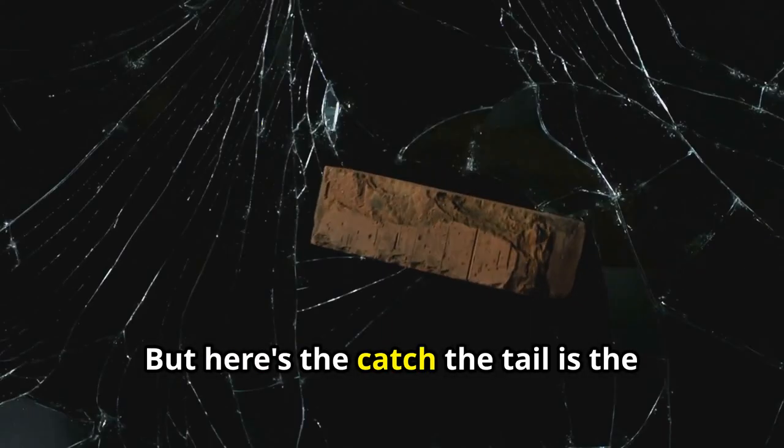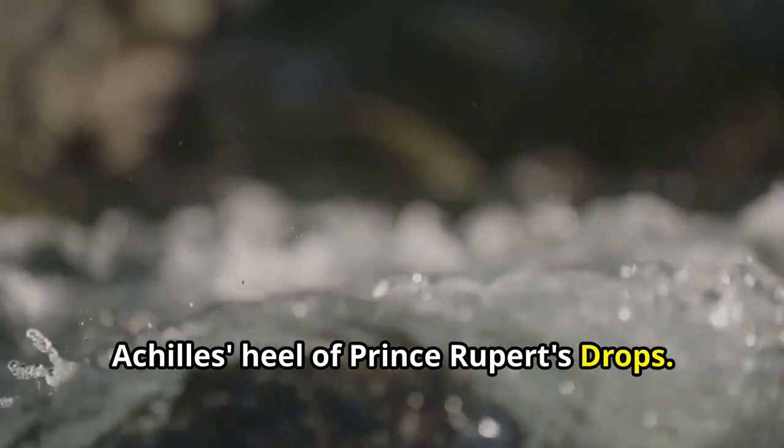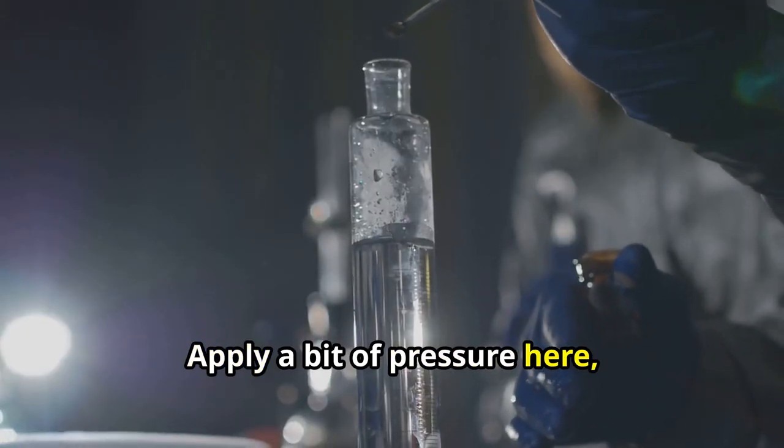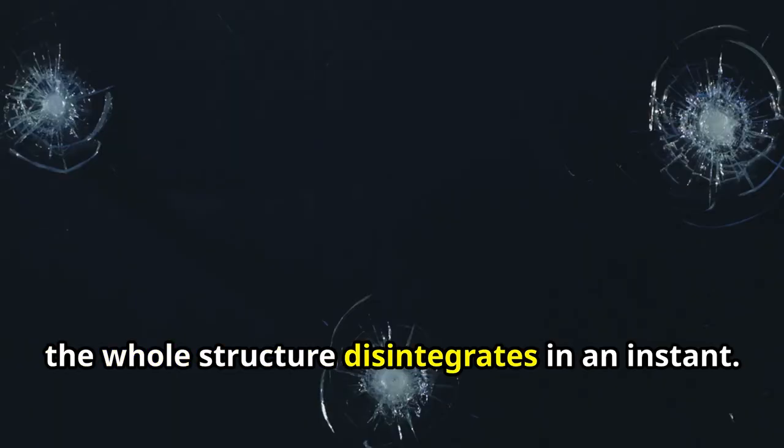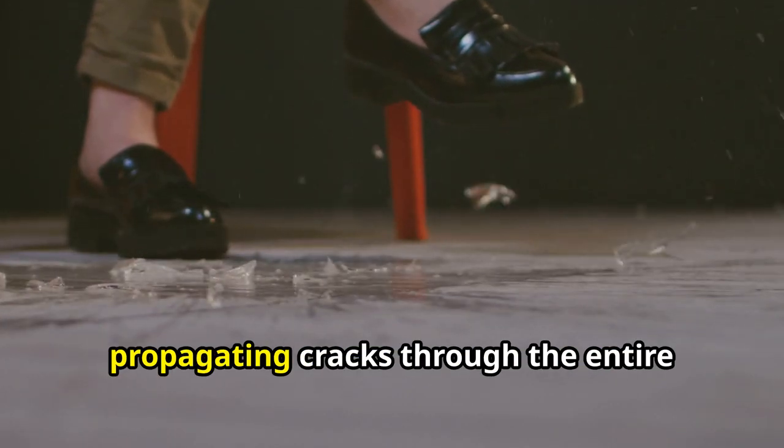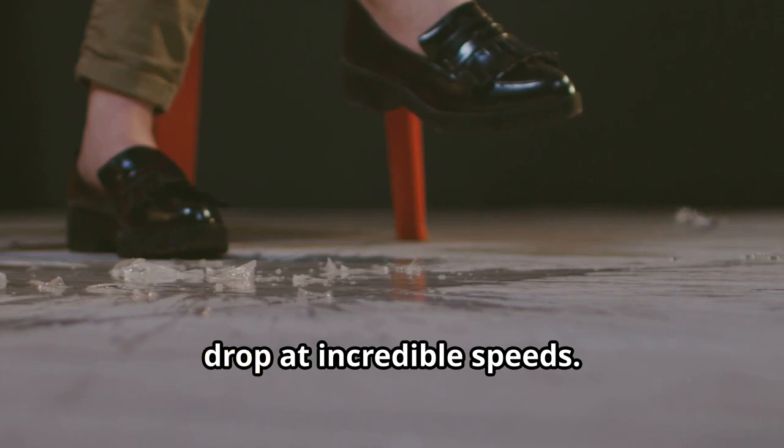But here's the catch. The tail is the Achilles heel of Prince Rupert's Drops. Apply a bit of pressure here, and the whole structure disintegrates in an instant. This dramatic shattering happens because snapping the tail releases all the internal stresses at once, propagating cracks through the entire drop at incredible speeds.